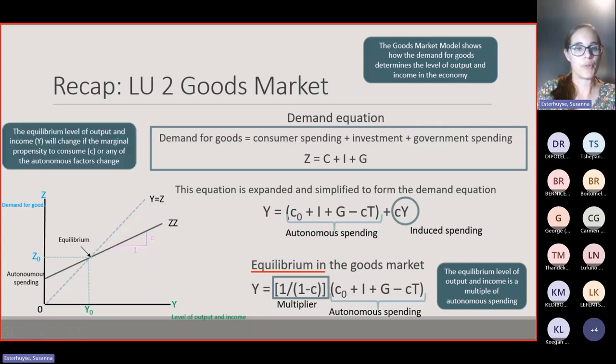This equilibrium point will change if the marginal propensity to consume changes, because the slope of the curve will change. For example, if it moves down, it will cross the line at a different spot. Or if the autonomous spending component changes, the graph will shift up or down, making the equilibrium point change.